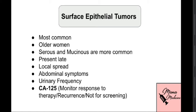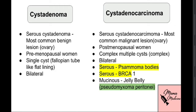The tumor marker CA-125 is used to monitor response to therapy or recurrence, but it is NOT used for screening — this is a very high-yield point. The typical clinical vignette will show a postmenopausal woman in her 60s or 70s complaining of urinary frequency, abdominal pain or pressure, and fullness. On lab results, her CA-125 will be elevated.